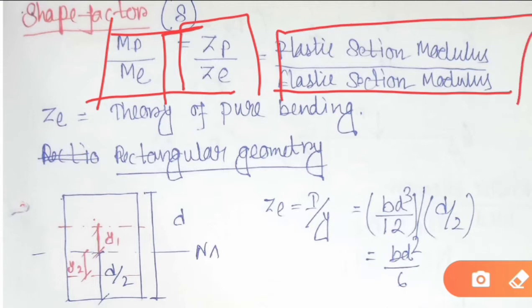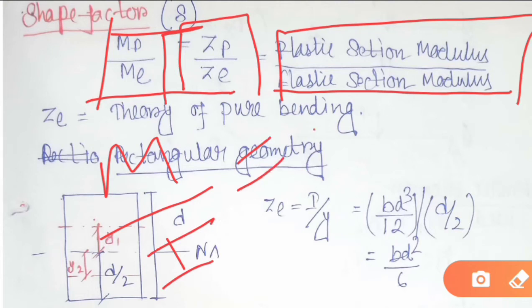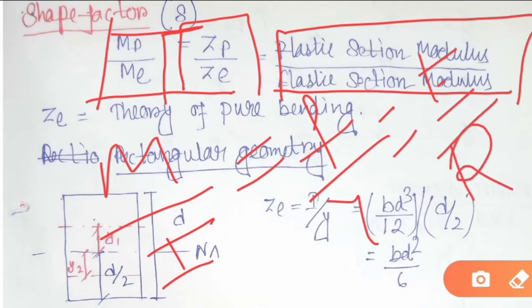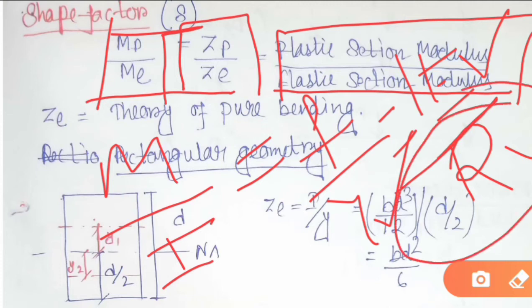The elastic section modulus can be found from the theory of pure bending. The equation, as we all know, is M/I = F/Y = E/R. Here M denotes bending moment, I denotes moment of inertia, F denotes bending stress, Y denotes distance from neutral axis, E denotes Young's modulus of elasticity, and 1/R denotes curvature, where R denotes radius of curvature.